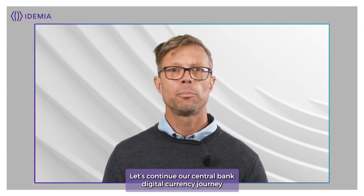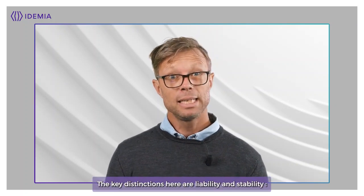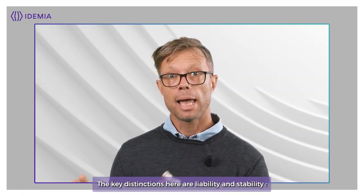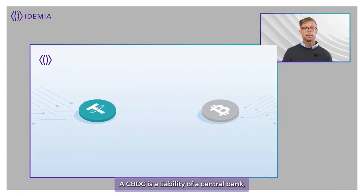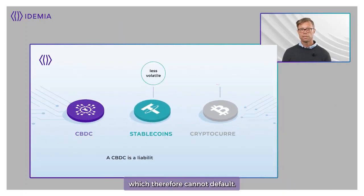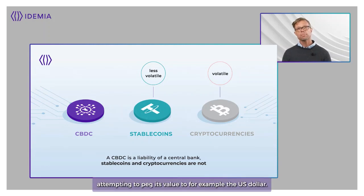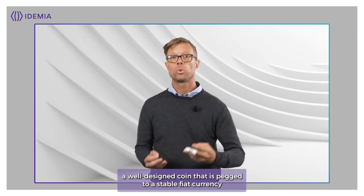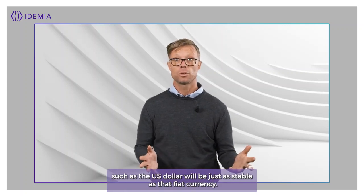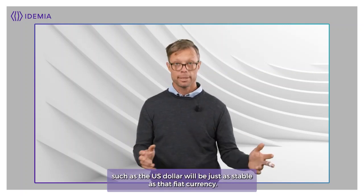Let's continue our central bank digital currency journey by comparing it to stablecoins and tokens like Bitcoin. The key distinctions here are liability and stability. A CBDC is a liability of a central bank, which therefore cannot default. A stablecoin is not a liability of a central bank, but is typically backed by a reserve asset — the US dollar, for example — attempting to peg its value to the US dollar.